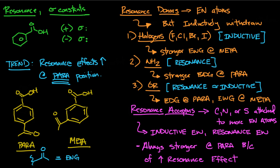The last topic to discuss is resonance and Hammett constants. With Hammett constants, we're trying to define how the pKa of benzoic acid is going to change. We have this acidic proton and a pKa value, and we want to know whether it goes up or down. First, let's define the sign convention because it's a little counterintuitive.